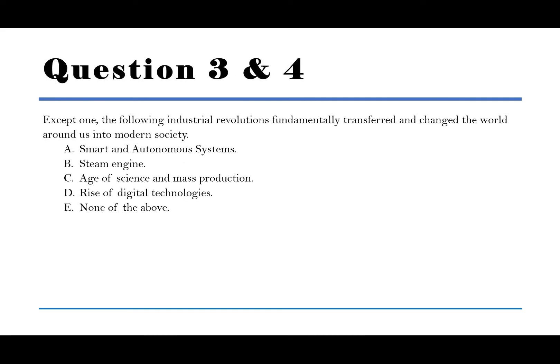Question number 3: Except one, the following industrial revolutions fundamentally transferred and changed the world around us into modern society. A. Smart and autonomous systems. B. Steam engine. C. Age of science and mass production. D. Rise of digital technologies. E. None of the above. The answer is E, none of the above.